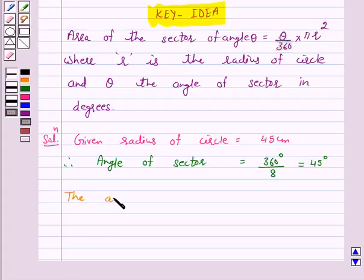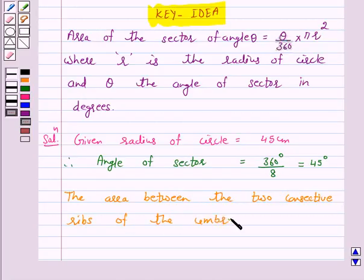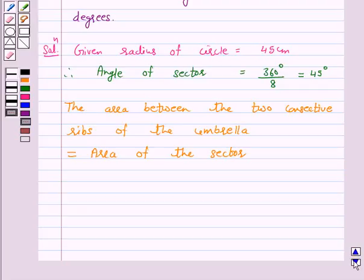The area between the two consecutive ribs of the umbrella is equal to the area of the sector of angle theta. We know the formula: area of the sector of angle theta equals theta upon 360 into pi r squared, and theta is 45 degrees here.